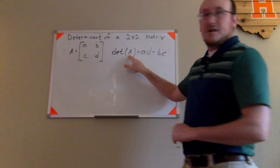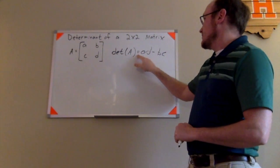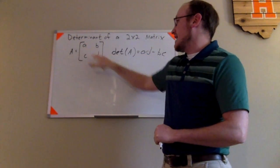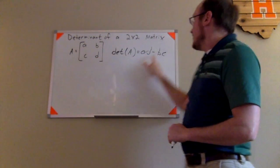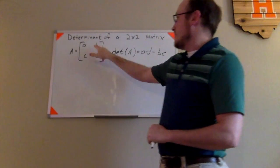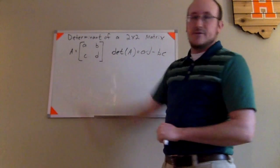The determinant of matrix A is actually equal to A times D. If you look, those are the entries on this diagonal, A times D, minus the product of B times C, the entries on that other diagonal.